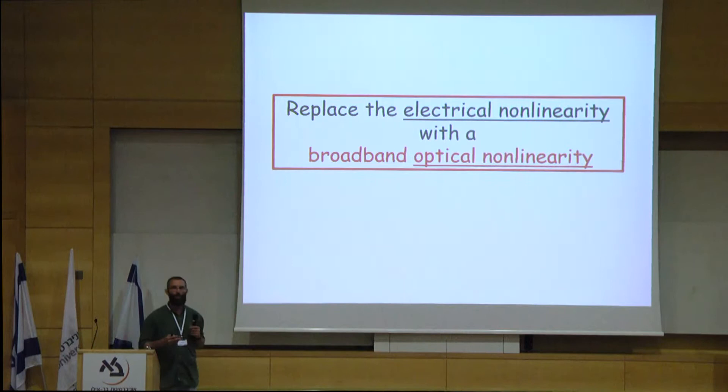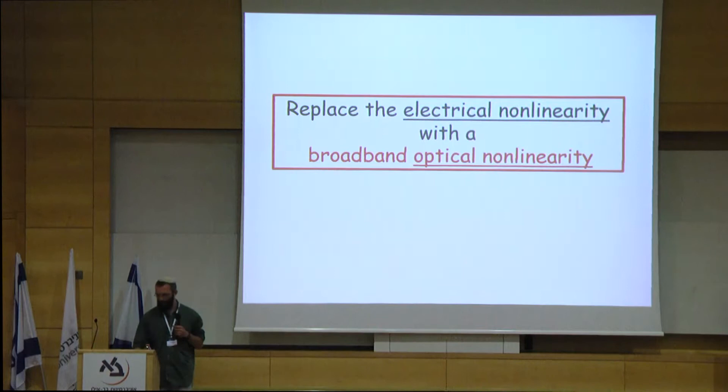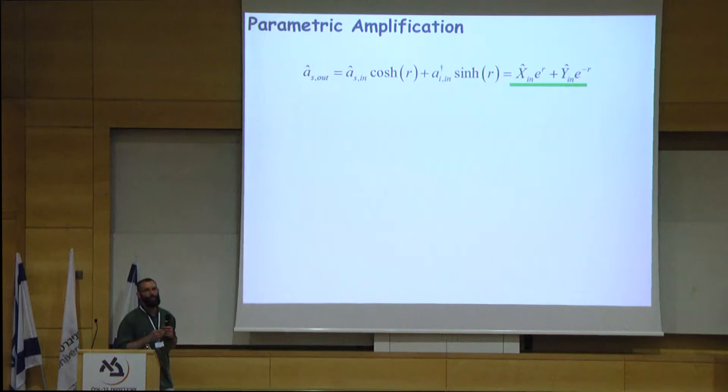We would like to replace the narrow-band electrical nonlinearity with a broadband optical nonlinearity: an optical parametric amplifier. A parametric amplifier is special because it does not amplify every input signal. It only amplifies the signal if it is of the right quadrature; the other quadrature will actually be attenuated.